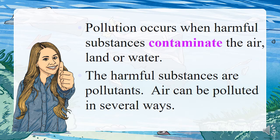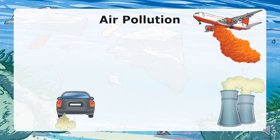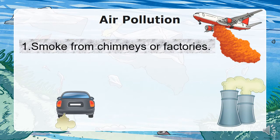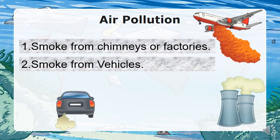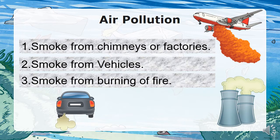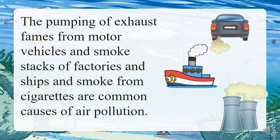Air can be polluted in several ways. First, air can be polluted by smoke from chimneys or factories, smoke from vehicles, or smoke from burning a fire. The pumping of exhaust fumes from motor vehicles, smokestacks of factories and ships, and smoke from cigarettes are common causes of air pollution.